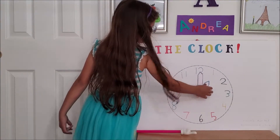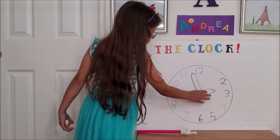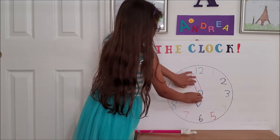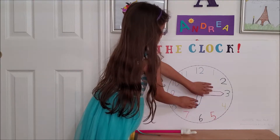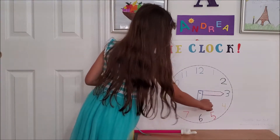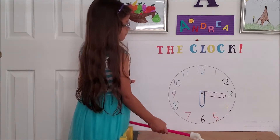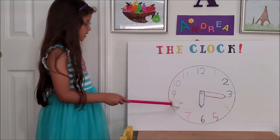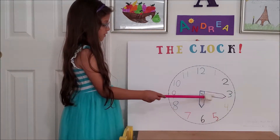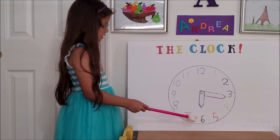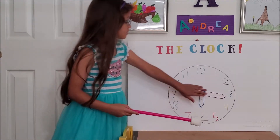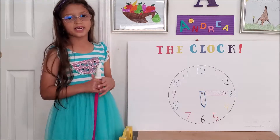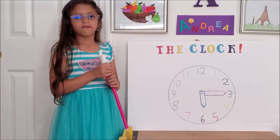First, what if the hour hand was pointing to the 6 and the minute hand was pointing to the 3? What time would it be? It would be 6:15. Because if you see here, the hour hand is pointing to the 6 and the minute hand is pointing to the 3 — but we know that the 3 doesn't actually mean 3, it means 15.